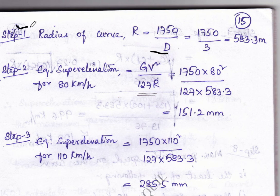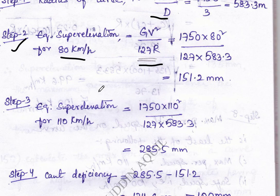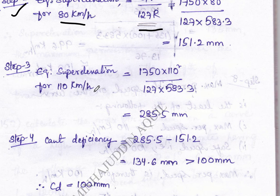Step two: calculate equilibrium super elevation for 80 km/h. We have the formula: E = GV² / 127R, where V is 80 km/h. Substituting the values, we get the equilibrium super elevation for 80 km/h.